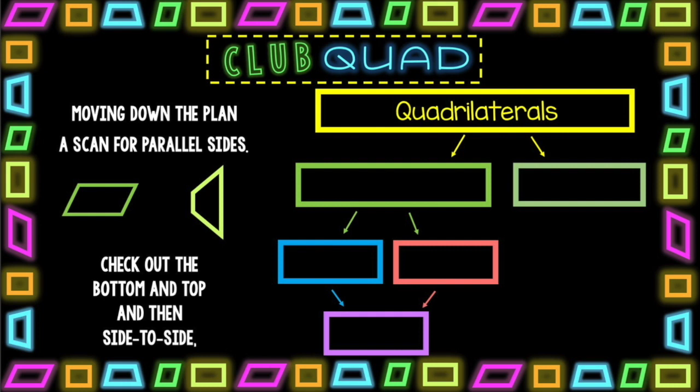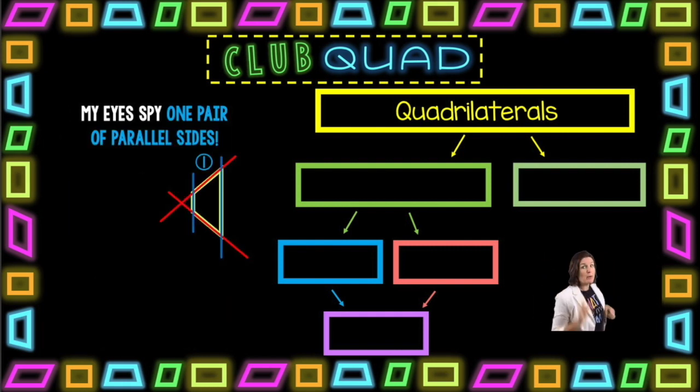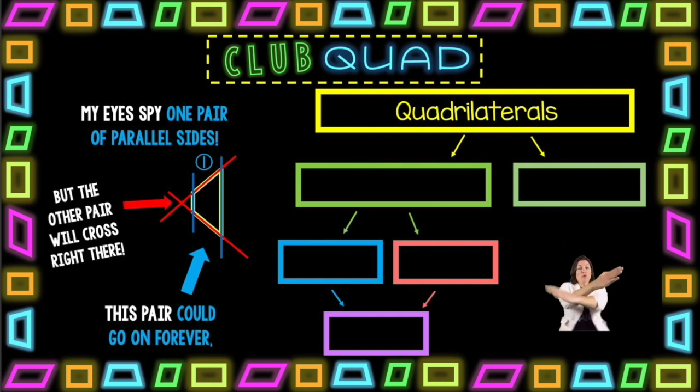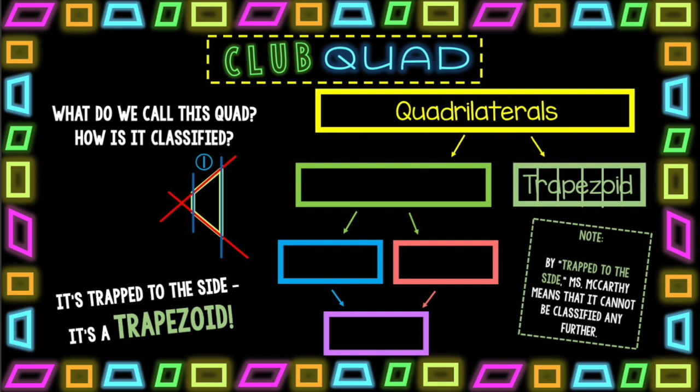Check out the bottom and top and then side to side. My eyes spy one pair of parallel sides. This pair could go on forever, but the other pair could cross right there. What do we call this quad? How is it classified? It's trapped to the side. It's a trapezoid.